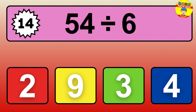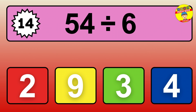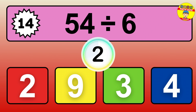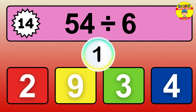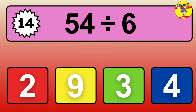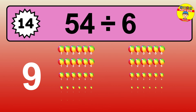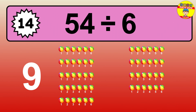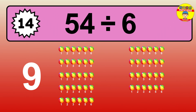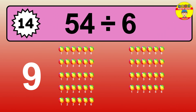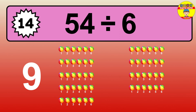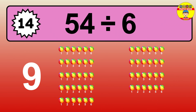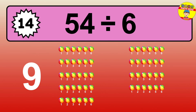54 divided by 6 is… time to think. Let's go to the solution. Divide the number 54 by 6. Each group contains 6 units. So, dividing 54 by 6 results in 9 equal groups. Thus, the result is… 54 divided by 6 equals 9.